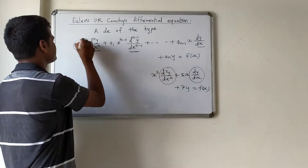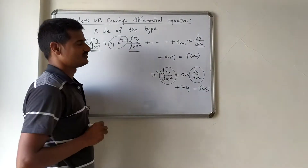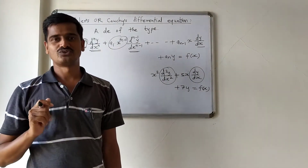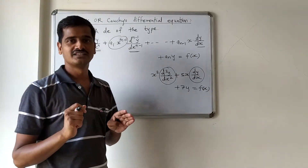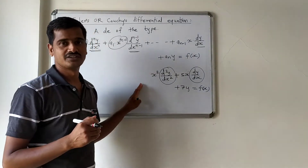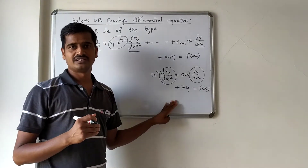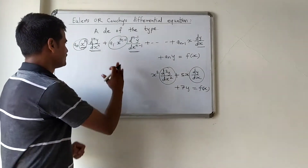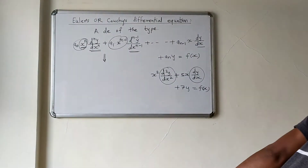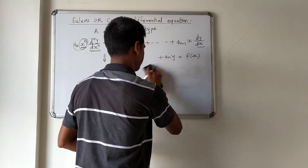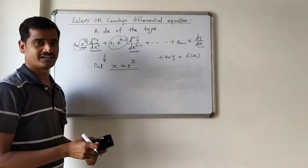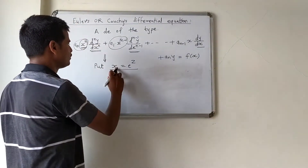We will use an appropriate substitution to transform this into a linear differential equation with constant coefficients. Once we get constant coefficients, we determine the complementary function and particular integral and finally the general solution. The required substitution to transform this into an LD with constant coefficients is: put x = e^z. This is a very important substitution. Therefore, z = log x.